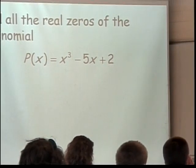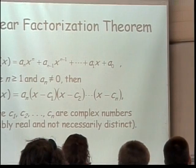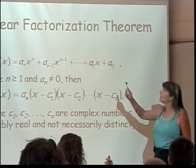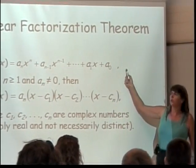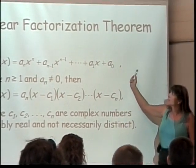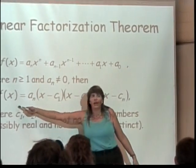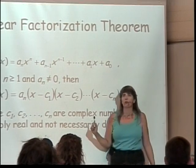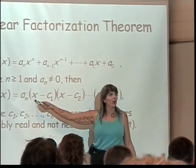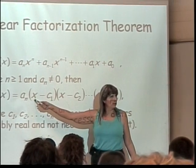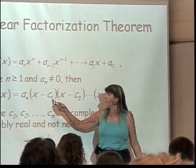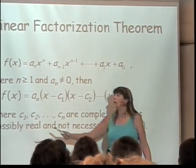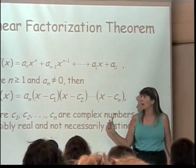The reason I wrote them this way has to do with this thing, the linear factorization theorem. It says that if you've got any polynomial, as long as your leading coefficient is not zero, then it can be factored like this into a bunch of linear factors. Linear meaning the highest power of x in any given factor is only one. So it would be x minus c, x minus another c, x minus another c, and so on and so forth, where all your c's are complex numbers.